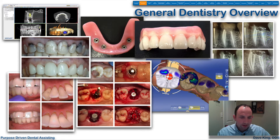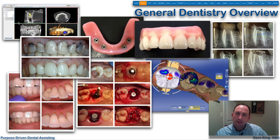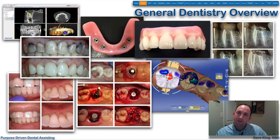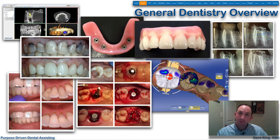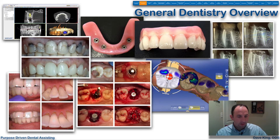Let's look at these cases I've got pulled up. On the upper left here, we have a cone beam x-ray, a CBCT three-dimensional image in the Simplant software, which is a software designed to help position and create a guide to assist in surgically placing a dental implant. Here is a significant makeover procedure — you can see there were six anterior crowns done.